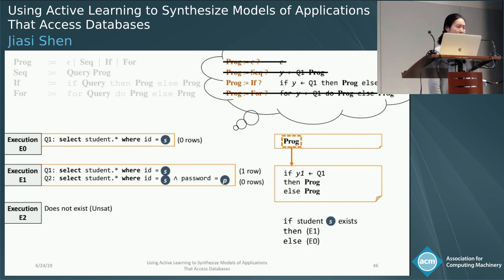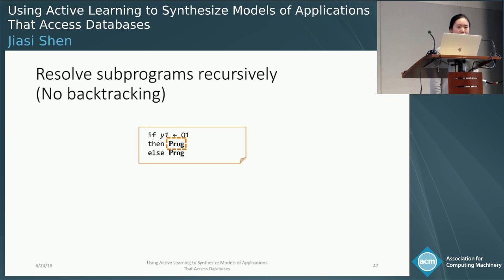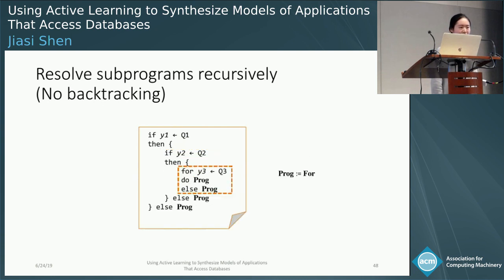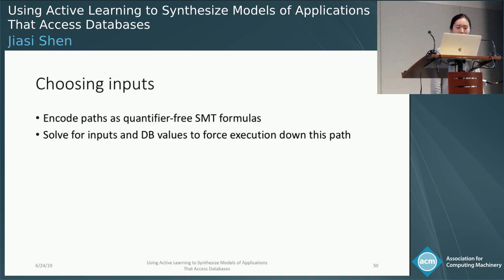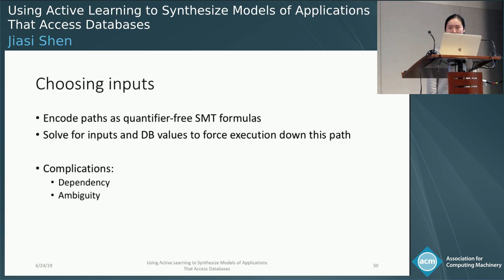From this new hypothesis, we have more PROG non-terminal symbols. For each of them, we are going to choose the right production and resolve them recursively. In this process, we do not need to backtrack because at each stage we expand only when we have enough information to uniquely choose the right production. A technical problem here is how to choose inputs. We encode paths in the hypothesis as quantifier-free SMT formulas, and then we solve for the inputs and database values to enforce the program to execute down certain paths. There are complications with dependency and ambiguity, and we deal with them in the paper.